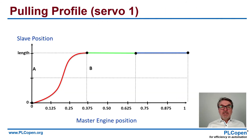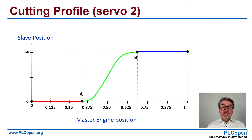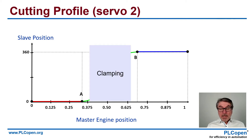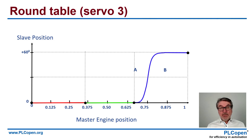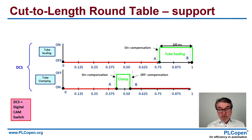If we look at the profiles we use: for servo one, we unwind the tube — we see a master versus a slave, and the slave goes to the required length of the tube. The cutting is servo two. Part of that is dealing with the clamping, so we link that to a clamping functionality. The third one is the round table — if the tube is on there, we turn it one tick of a full round, and the workstation works on that part — for instance, tube sealing as the first step. This is supported with clamp functionality on the bottom and tube sealing on the top, which is on the table itself.